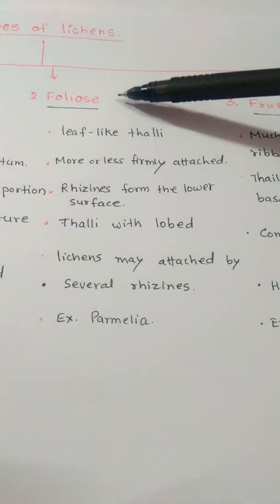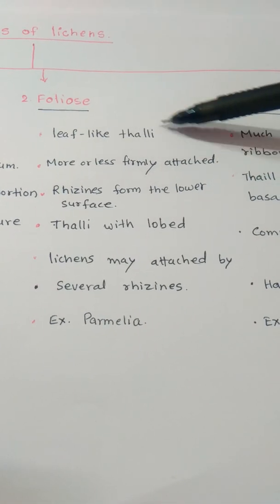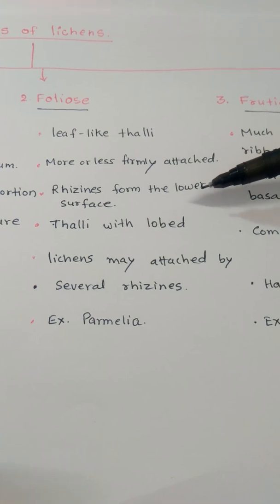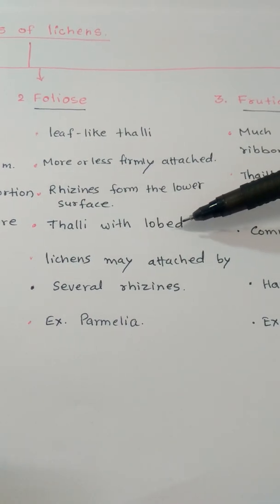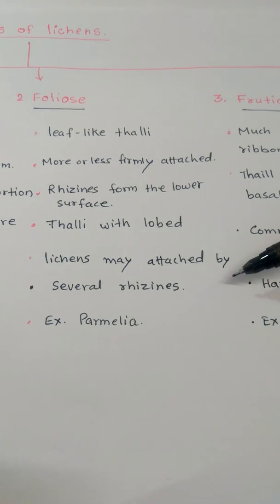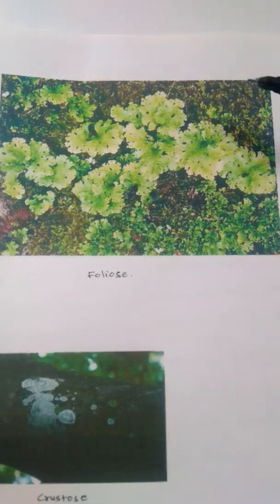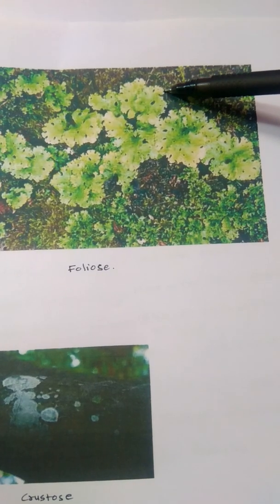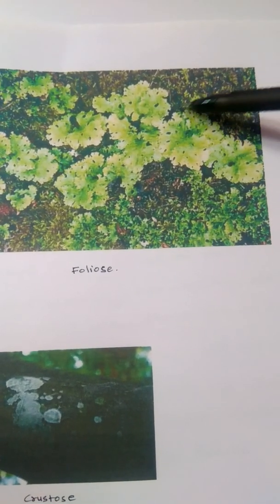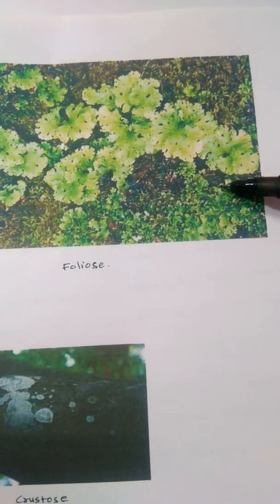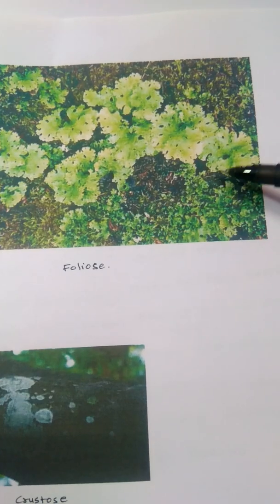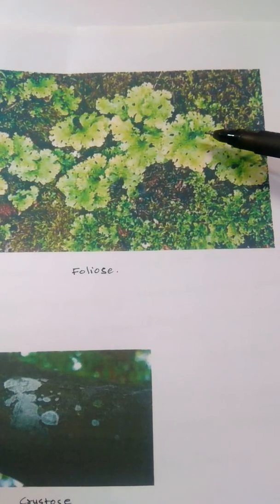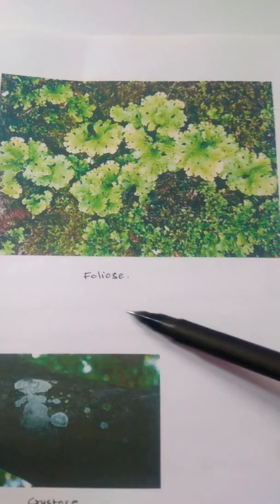The second type is Foliose Lichens. These Lichens look like leaves, are more or less firmly attached, and have rhizines formed on the lower surface. The thallus has lobes and may be attached by several rhizines. Example: Parmelia. These are very flat but can be easily separated from the substratum. In Foliose Lichens, rhizines are present and are developed by the fungal partner to absorb food material from the substratum.